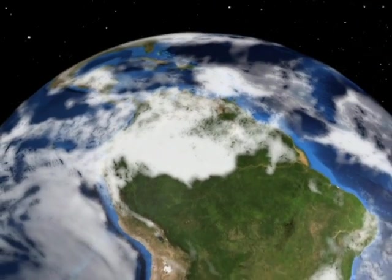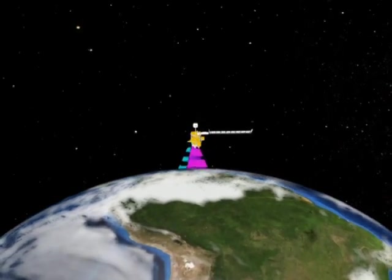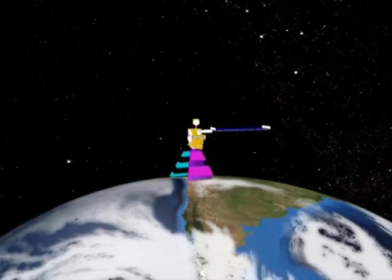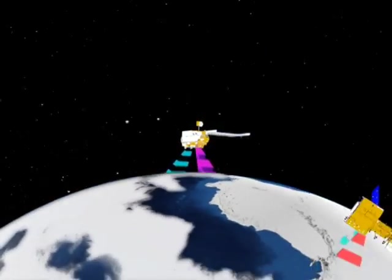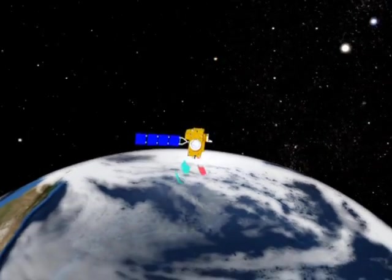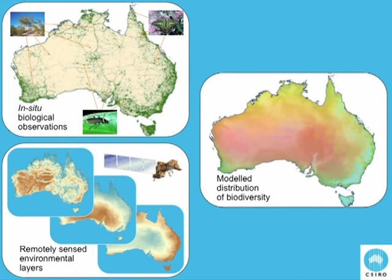Satellites orbit the Earth taking images of the Earth's surface. These images can be used to create maps of things like terrain, climate, and soil variables. These can then be linked to biodiversity occurrence data to map patterns in the distribution of biodiversity around the planet.